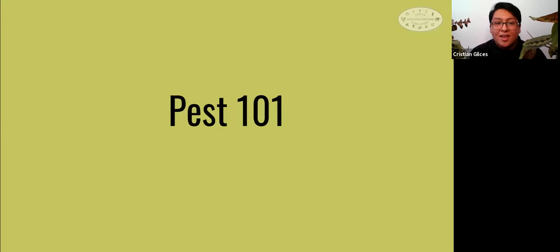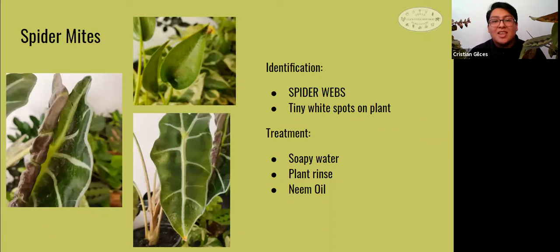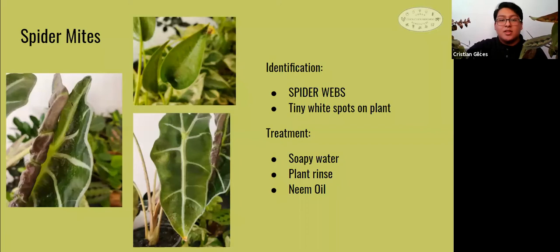The first pest we're going to talk about is spider mites. Spider mites are super common — they grow and multiply really fast, which could be really detrimental to our plants, but not unless you catch them early. When identifying spider mites, watch out for white dust-like spots and spider webs. If you notice dots but no spider webs, then you caught them early. If you blow on the spots lightly and they don't fly off, they are mites. You can rinse your plant to get the mites off, then go in with a cotton swab with water and dish soap to wipe off any excess that didn't wash away.